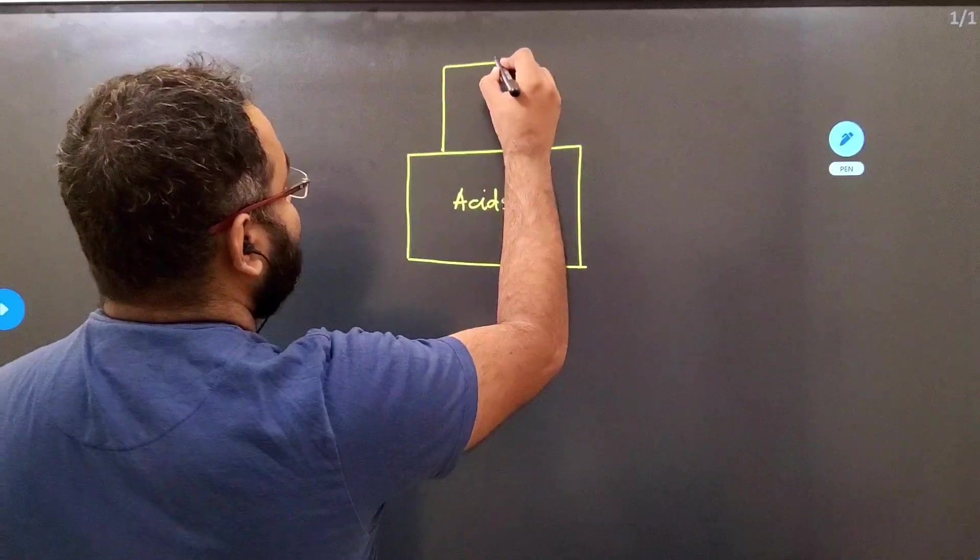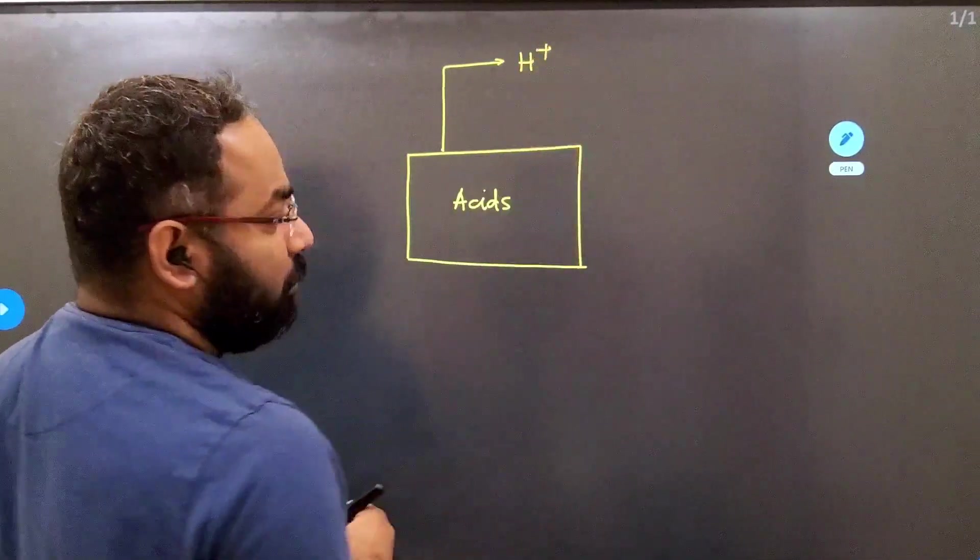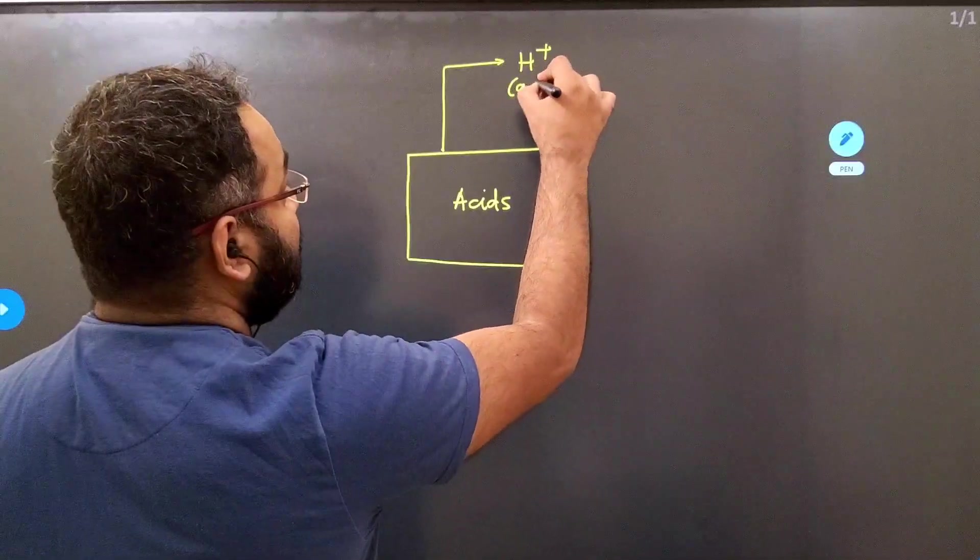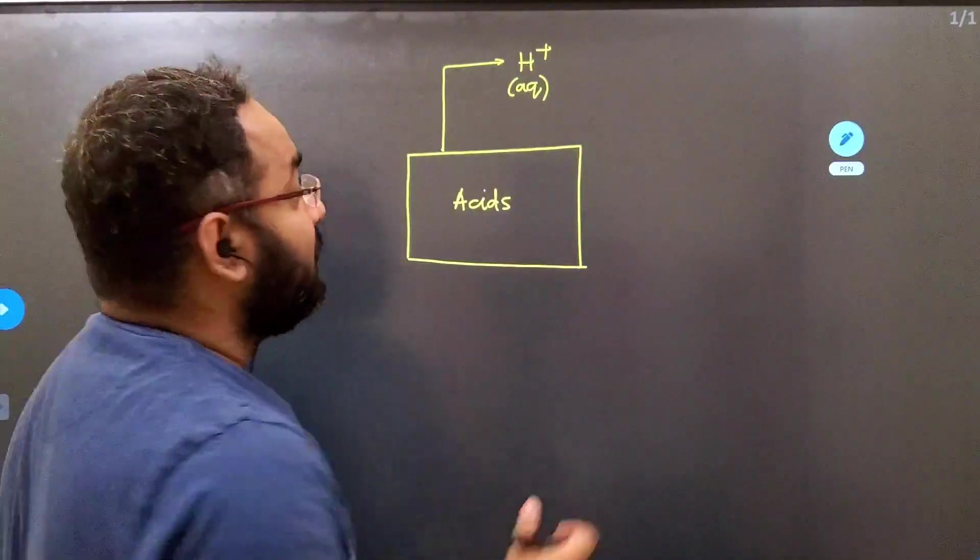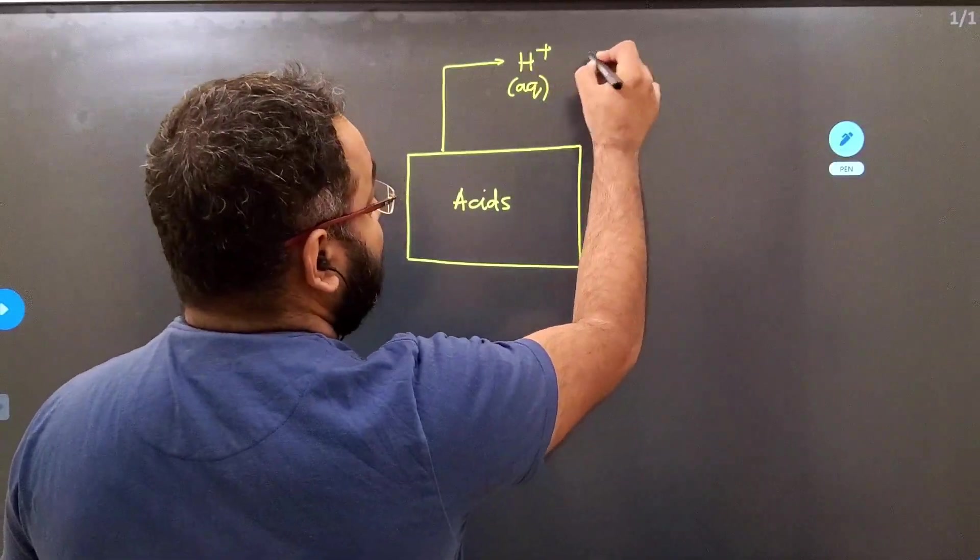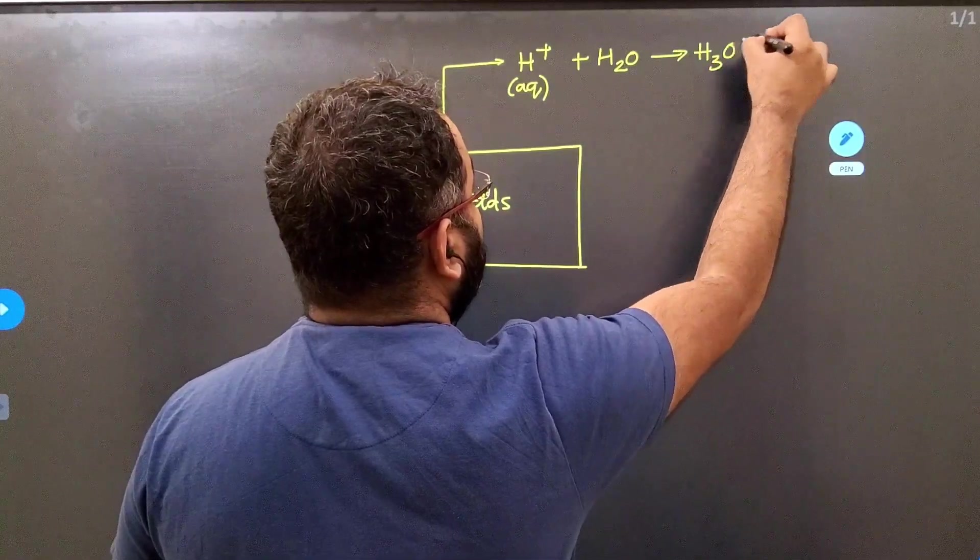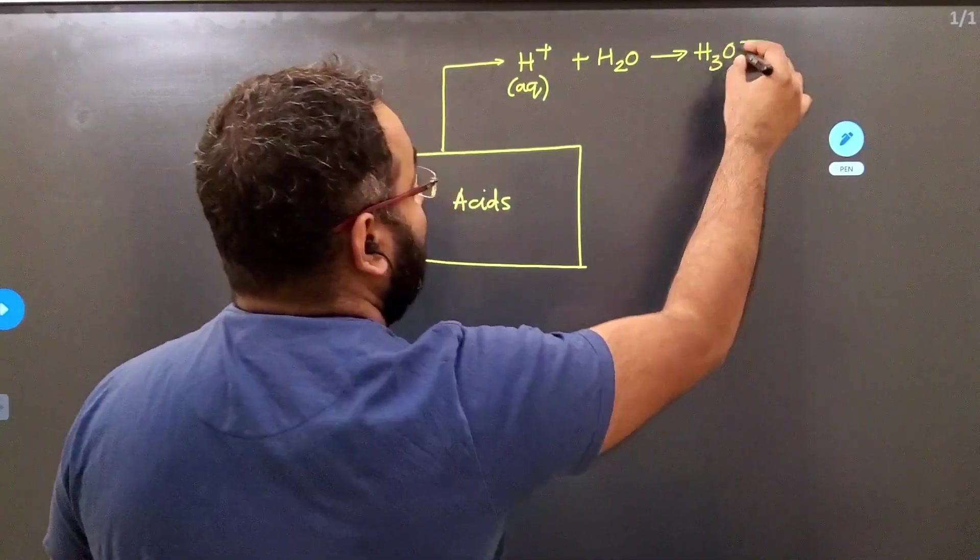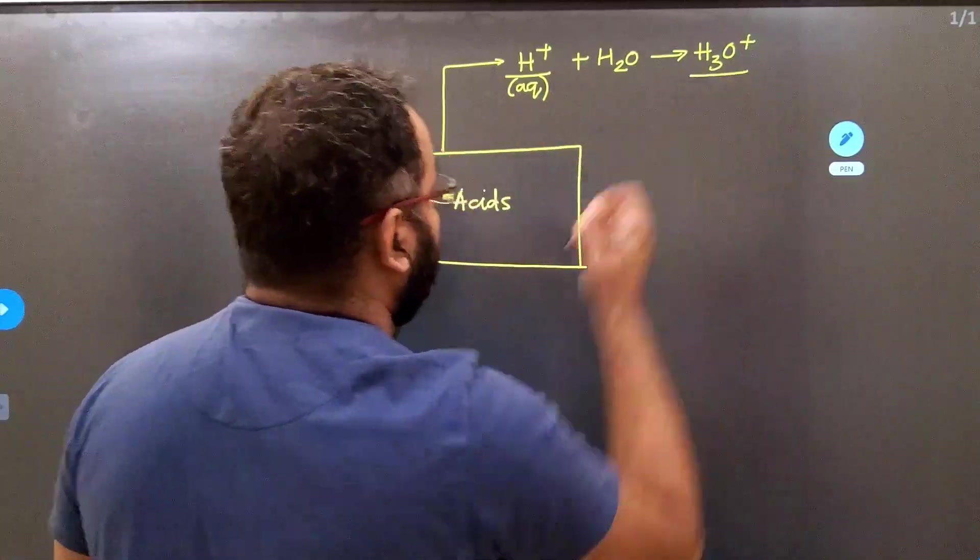The first thing we all need to know is acids are those chemical substances which release H+ ions in aqueous solution. So the word aqueous solution is very important. Without water, no chemical can show any acidic characteristic. Now this H+ ion generally tends to combine with that water to give you hydronium ion. So the keywords you need to remember when it comes to acids is H+ ion which is your hydrogen ion and hydronium ion.